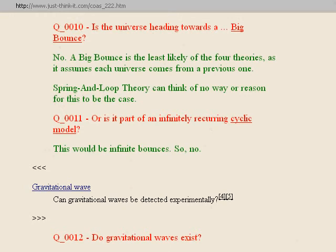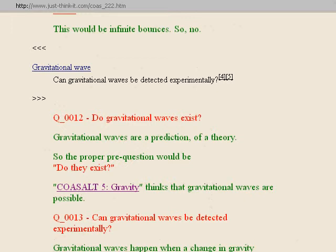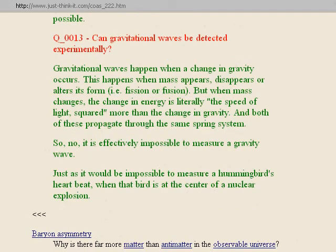Gravitational waves, next section. Can gravitational waves be detected experimentally? There's an earlier question: do gravitational waves exist? They haven't been detected yet and are a prediction of a theory. I think they're possible. When I talked about gravity in my COSALT 5 talk, I said I think gravitational waves are possible. Question thirteen: gravitational waves happen when a change in gravity occurs — when mass appears, disappears, or is altered through fission or fusion. The change in energy from that mass change is literally the speed of light squared more than the change in gravity, and both propagate through the same spring system. So it is effectively impossible to measure a gravity wave, just as it would be impossible to measure a hummingbird's heartbeat at the center of a nuclear explosion.